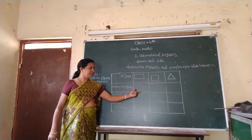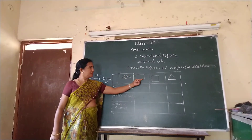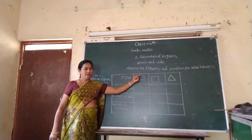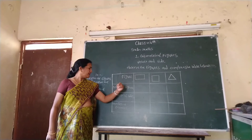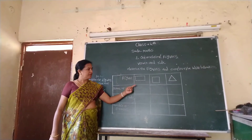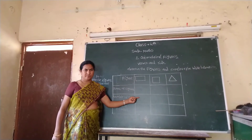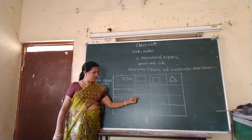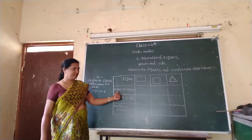Rectangle ka side kitnay hai? One, two, three, four. How many sides? Kitnay sides hai? This is four sides.